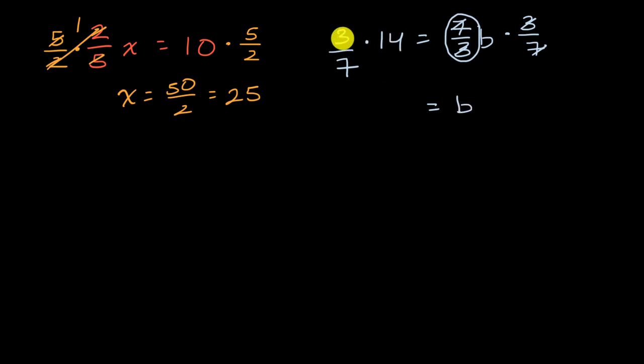And 3 7ths times 14, you might see this as 14 over one. And you could say, okay, this is going to be three times 14 over seven times one. Or you could say, hey, let's divide both a numerator and a denominator by seven. So this could be two and this could be one. So you're left with three times two over one times one, which is just going to be equal to six.